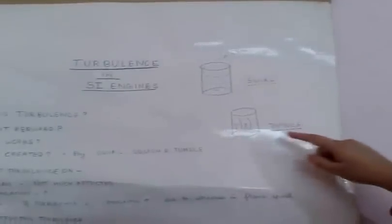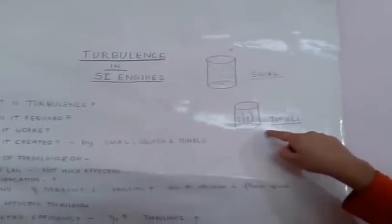The tumble motion: in this motion, the rotation axis of the air-fuel mixture is normally the circumferential axis. It is created due to squish near the outer edge of the cavity or piston bowl, and it can be increased by modifying the piston crown design. The phenomenon of swirl is denoted by a figure in which air comes in a swirl manner, and tumble is shown as a different type of figure.